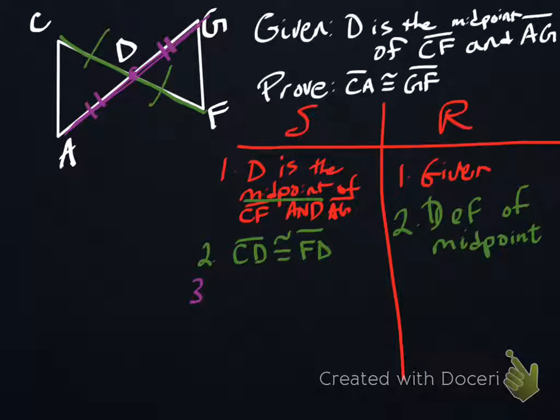So this statement would be that AD is the same as GD. And the reason that's true is the definition of midpoint. I'll just use these little marks to indicate the exact same thing to save some space.